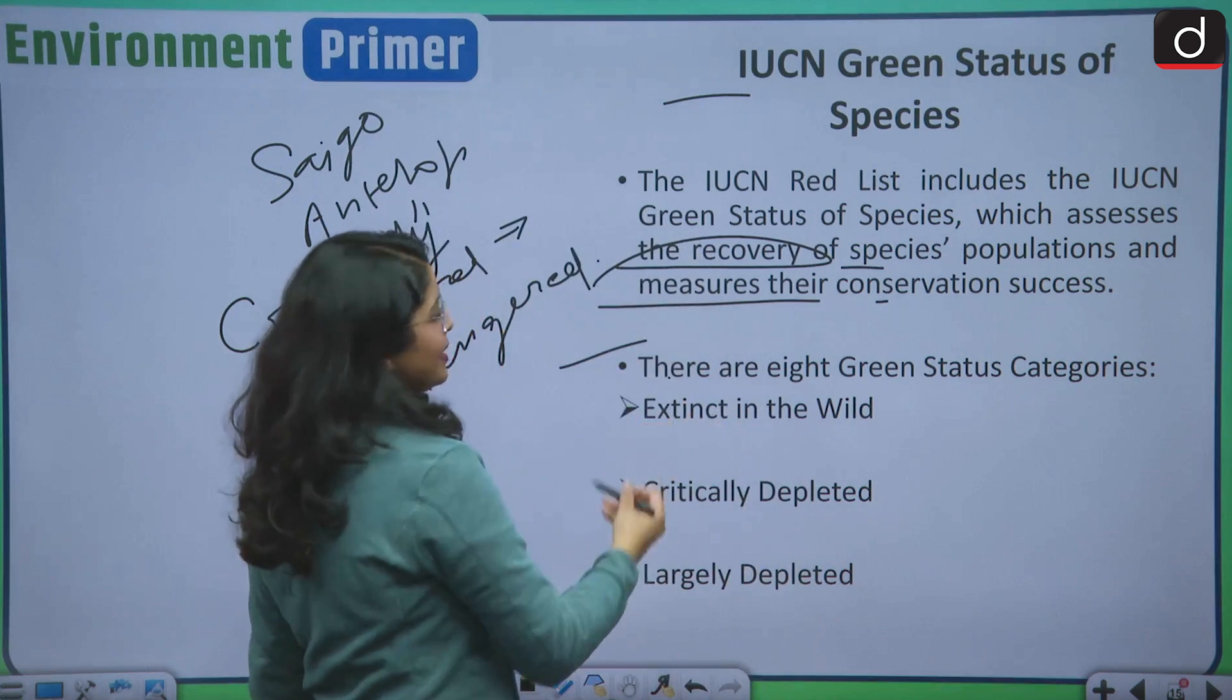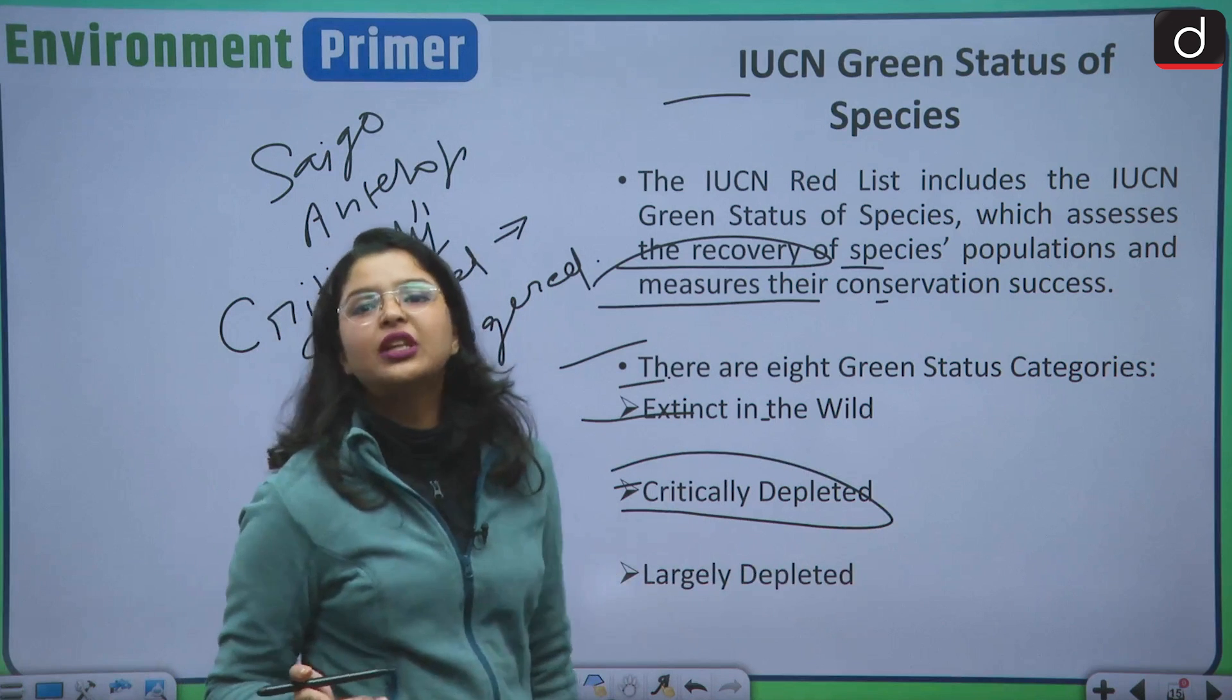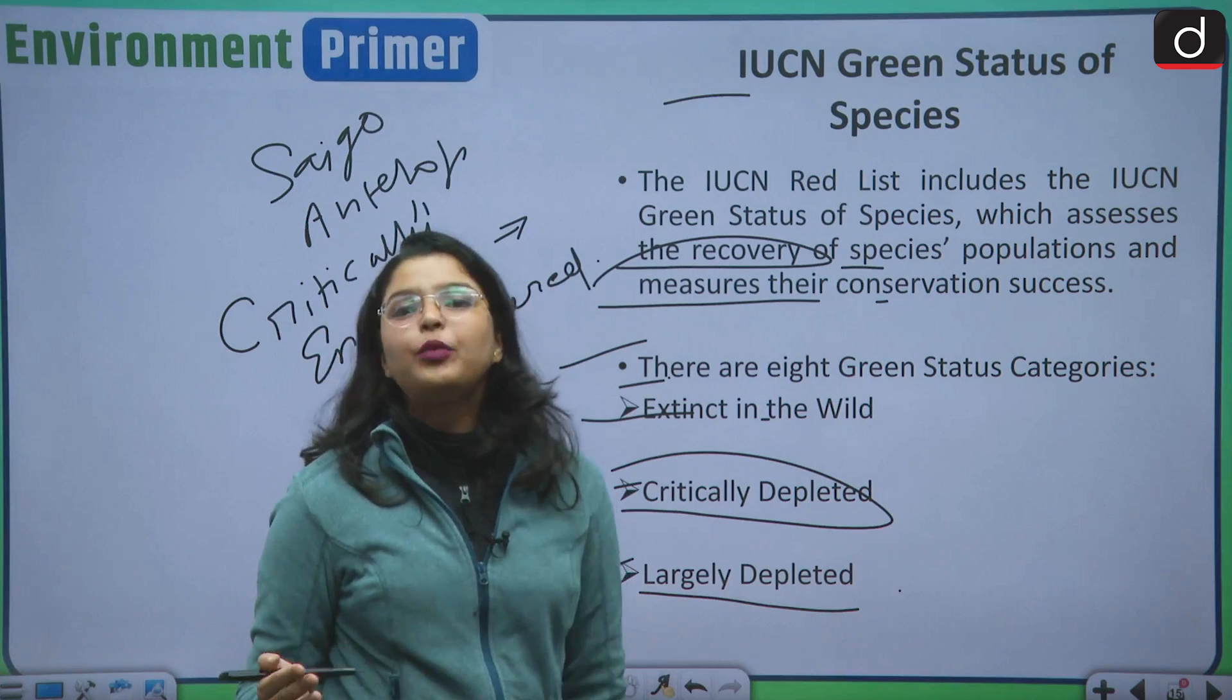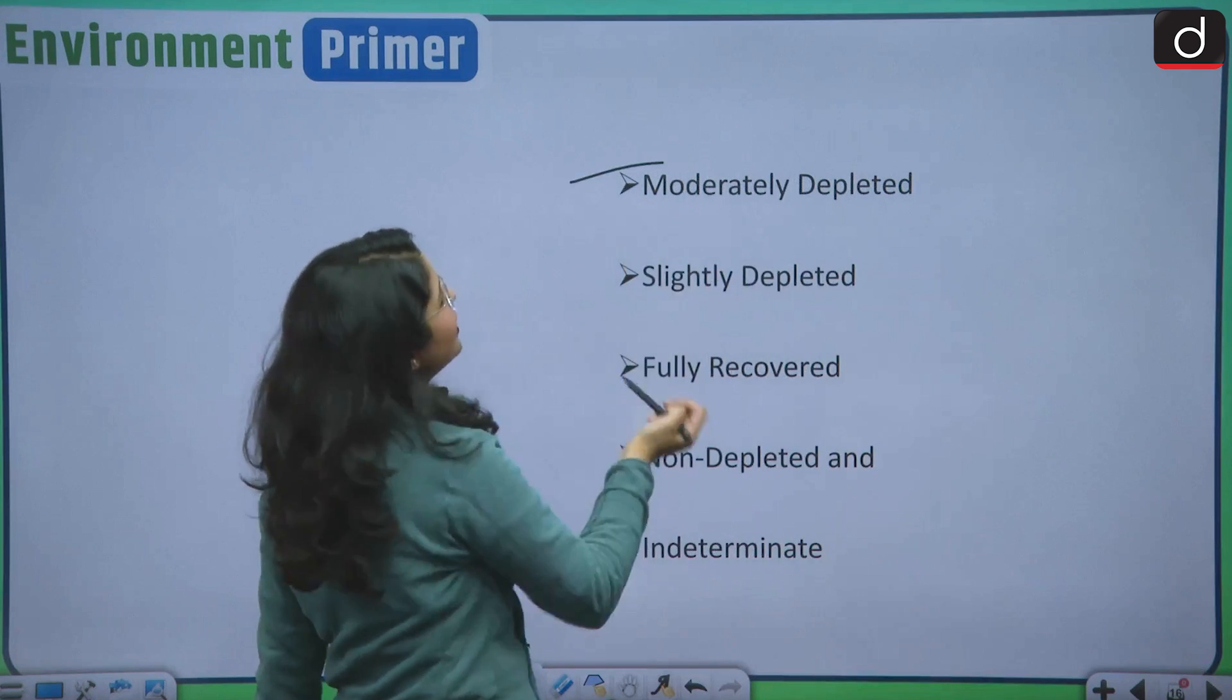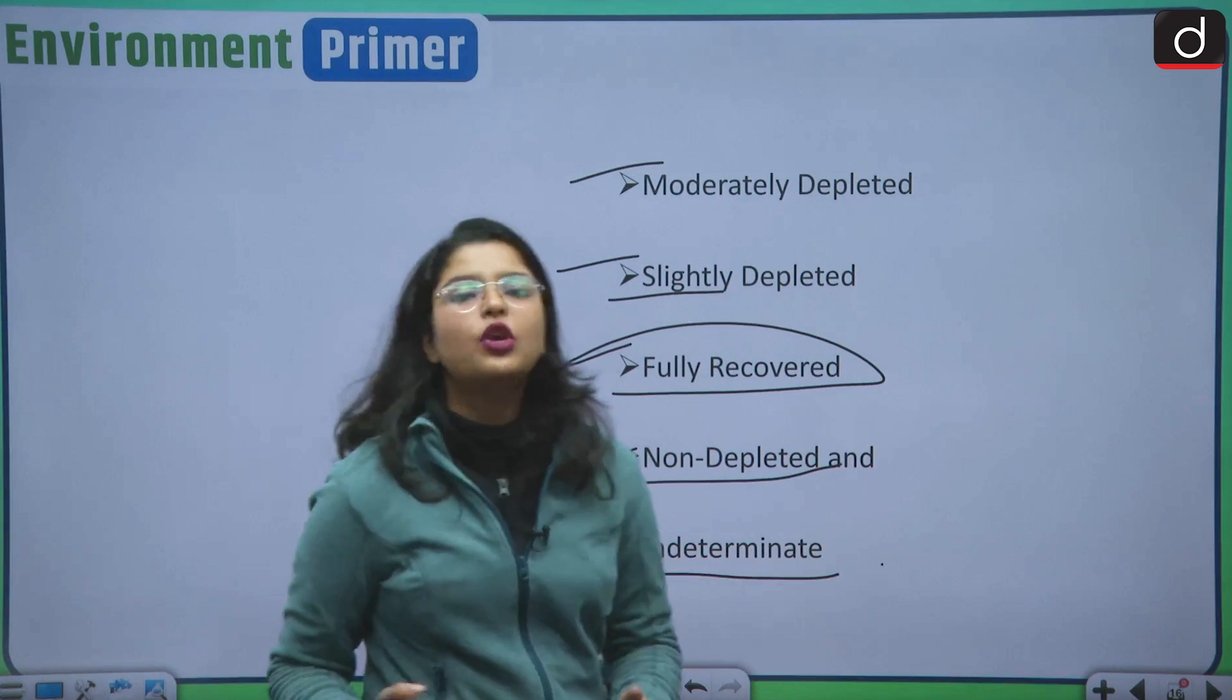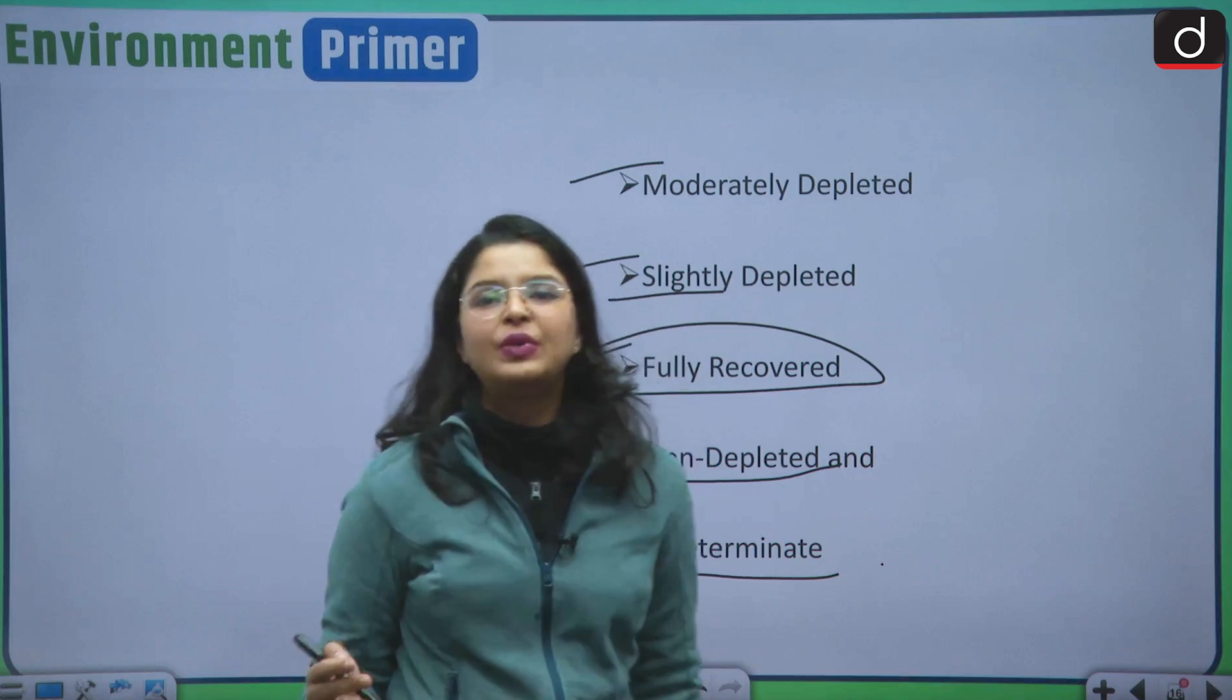There are 8 green status categories that means extinct in the wild, critically depleted, that means we need to pay more attention towards their conservation efforts. Then, largely depleted, that means we need to pay 100% attention to conserving them because any point of time they could become extinct. Then, moderately depleted, then slightly depleted, fully recovered, non-depleted and indeterminate, that means we are not able to determine that whether they are depleted or not depleted. These were the categories of the IUCN green status of species.